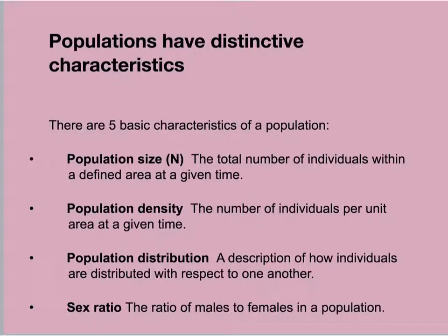Populations have very distinctive characteristics. One of the first things apparent when studying populations is that they are dynamic — basically constantly changing. There are five basic characteristics of these ever-changing populations. Population size is the total number of individuals within a defined area. The California condor, for example, once ranged throughout California and the southeastern United States.